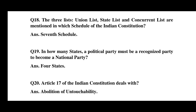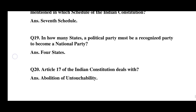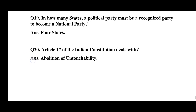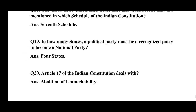Question number 28: Article 17 of the Indian constitution deals with the abolition of untouchability. This article abolished untouchability and its practice in any form is forbidden, making it a strong constitutional provision against discrimination in India.